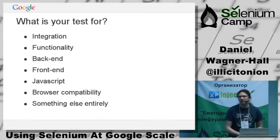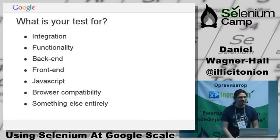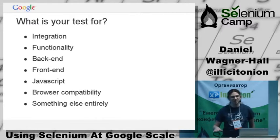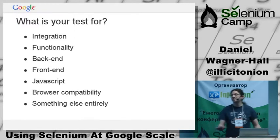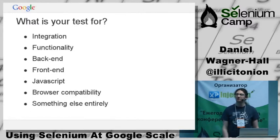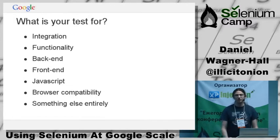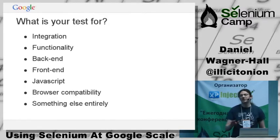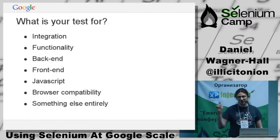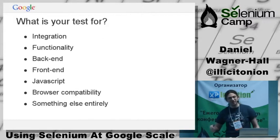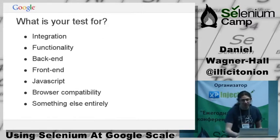I talked to a guy a year or two ago who had a policy with his team: every time you want to write a Selenium test, you need to justify to the entire team why no smaller test could possibly test what you're testing. You have to stand up and argue not just that Selenium is useful, but that other things aren't good enough. And it's rare that you win that argument, particularly when 15 people see their build failing every day because of a Selenium click.